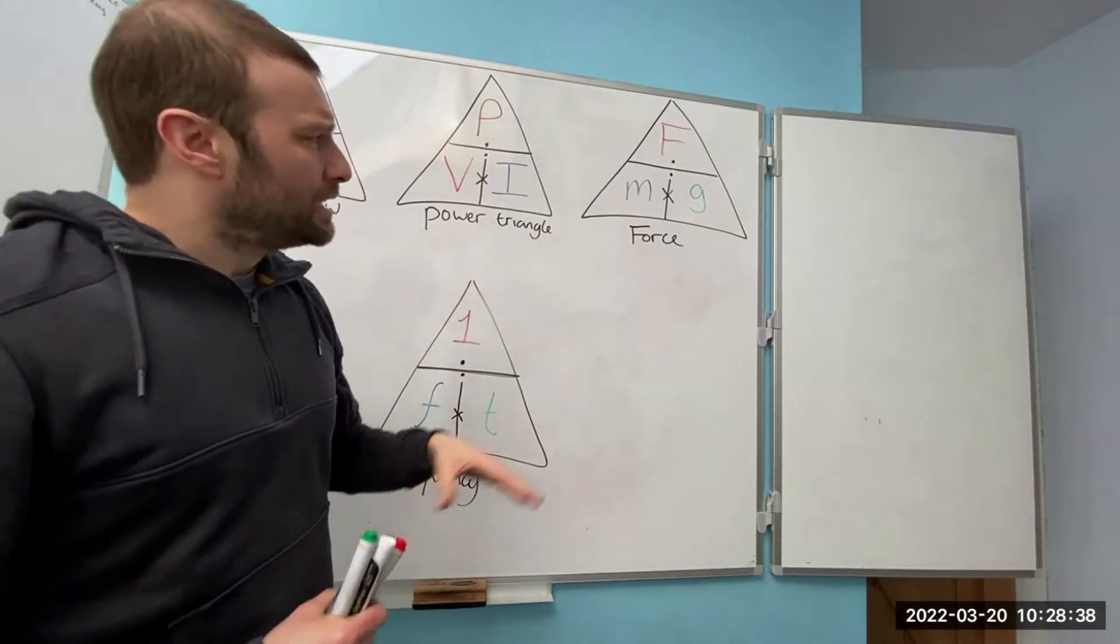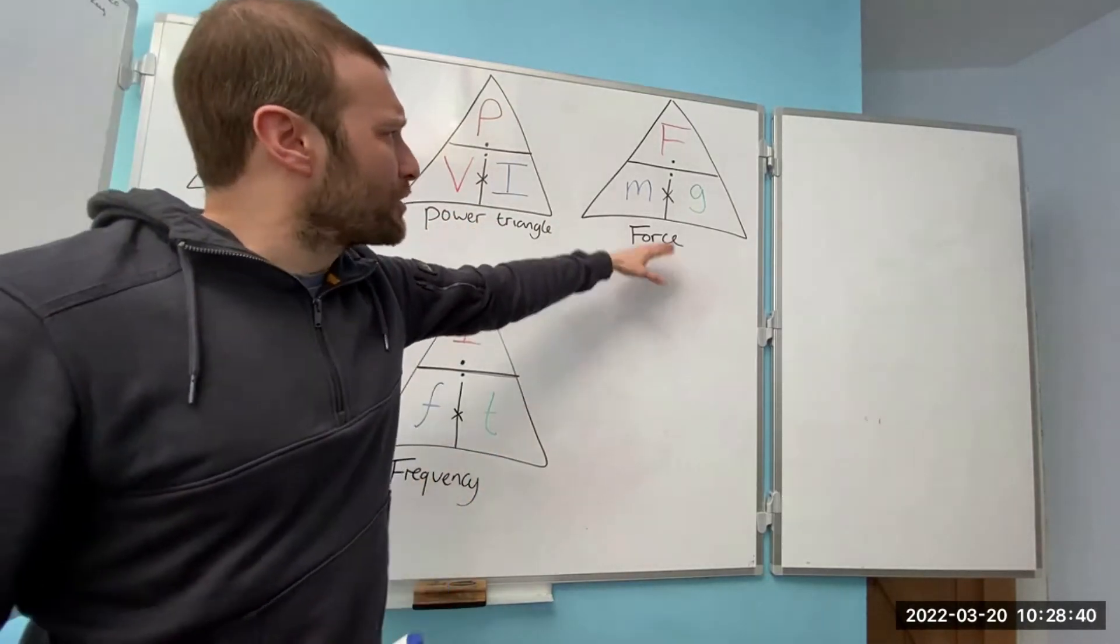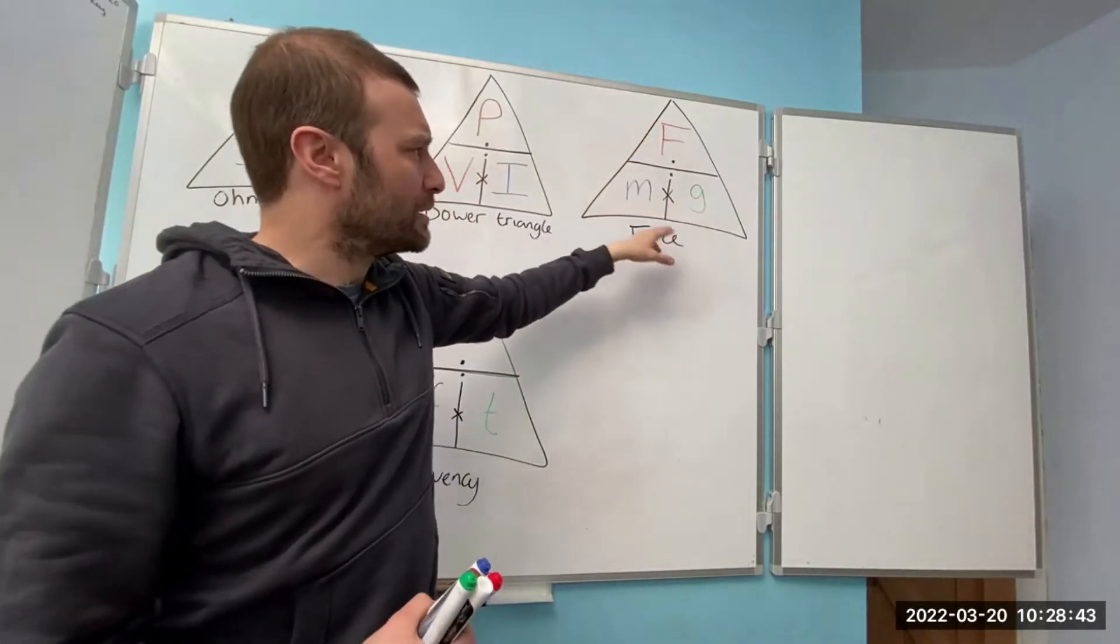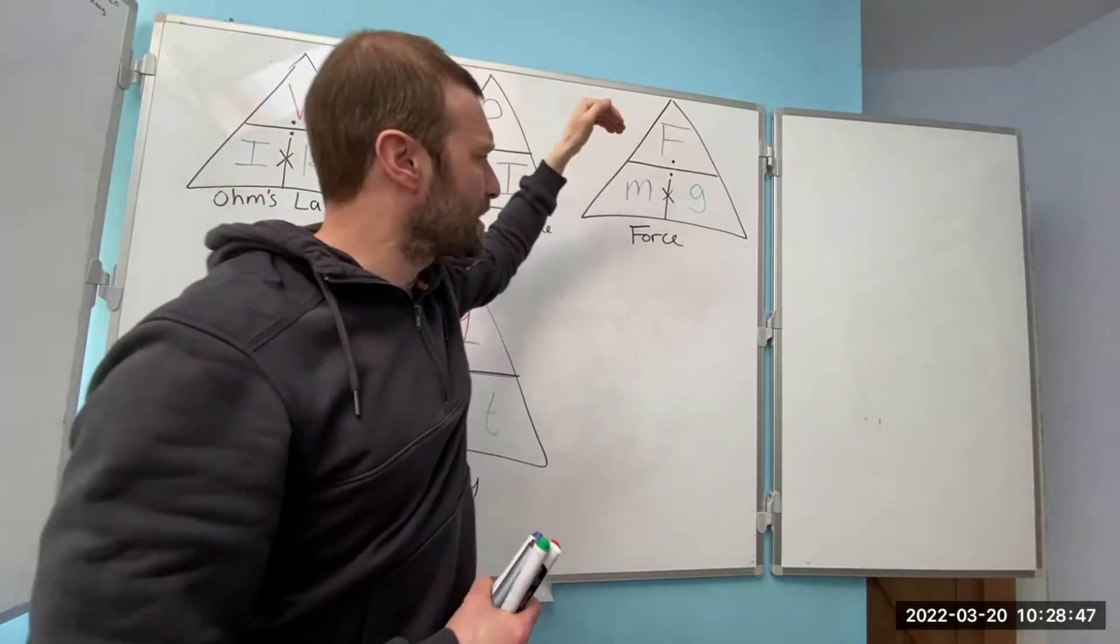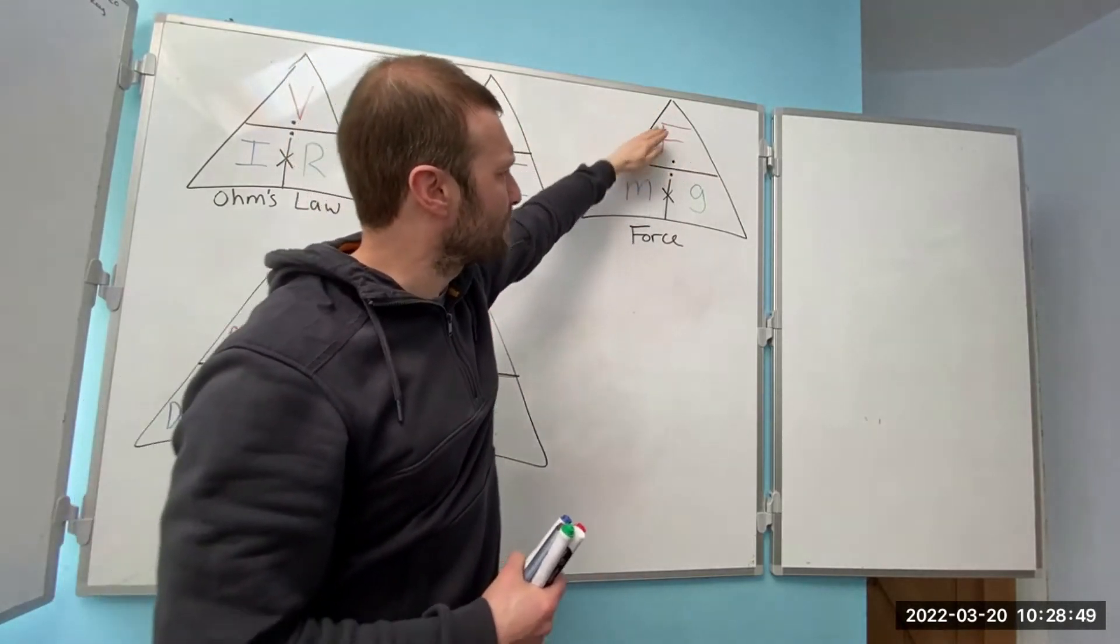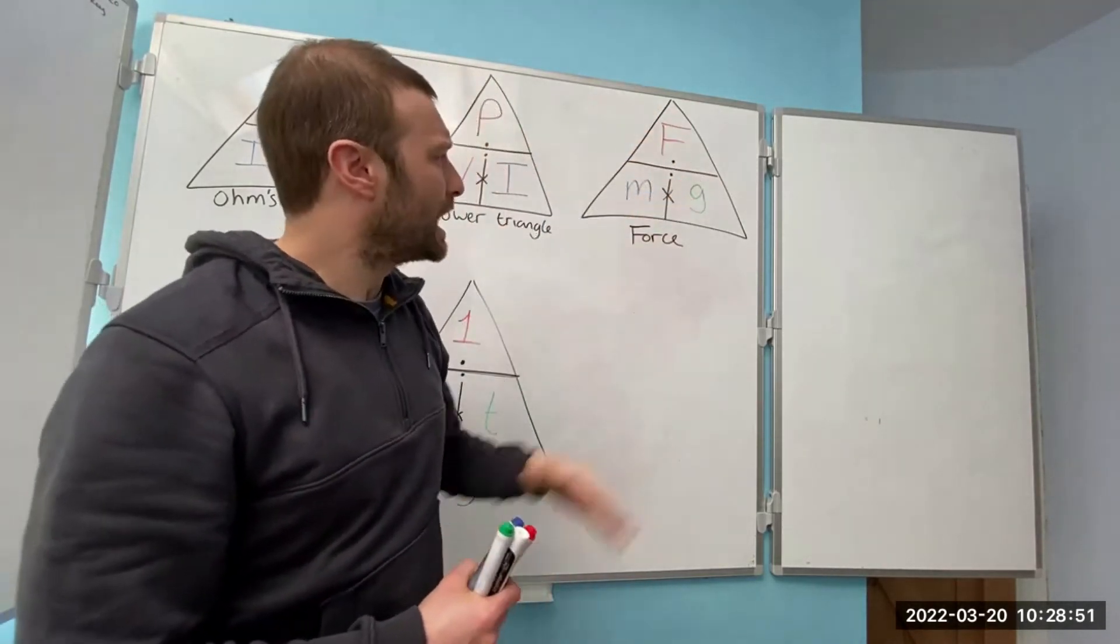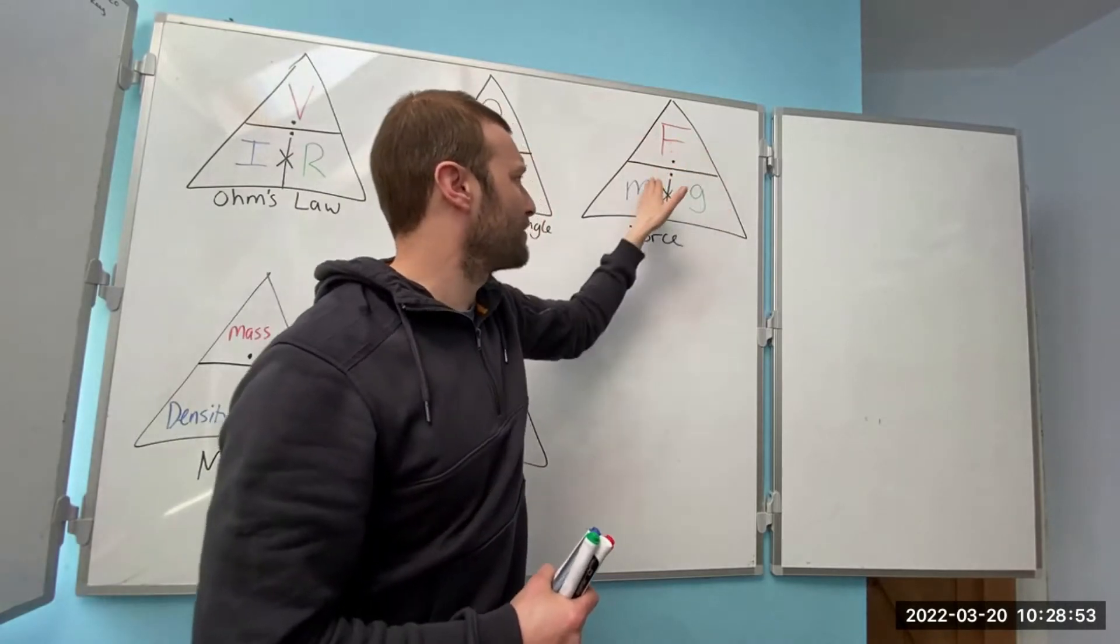Then we've got the force triangle. We've got force at the top, mass times gravity. Mass times gravity equals force. So if I want to find force, mass times gravity. If I want to find mass, that's force divided by gravity. And if I want to find gravity, that's force divided by mass.